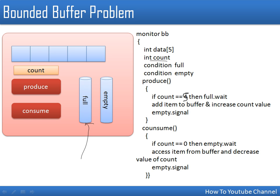If the buffer is not full, the producer puts its data in the buffer and then calls empty.signal. This wakes up any consumer process waiting in the empty queue so it can consume that data. For the consume operation, if count equals 0 the buffer is empty, so that process enters the empty queue. Otherwise the consumer takes data from the buffer and calls full.signal to wake up any waiting producer — sorry, this is not empty, this is actually full.